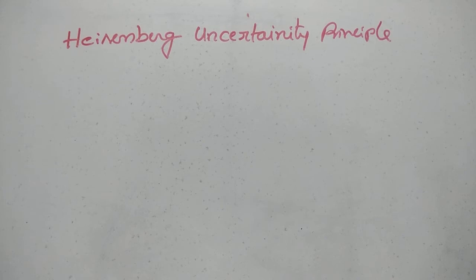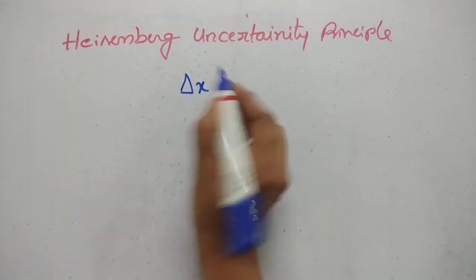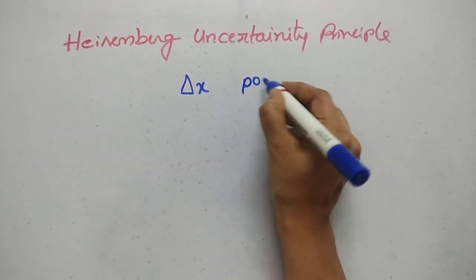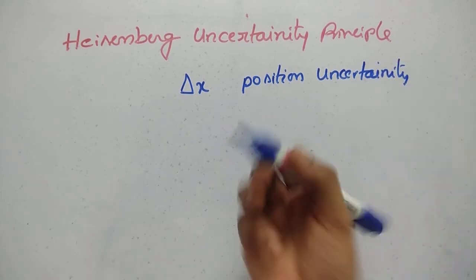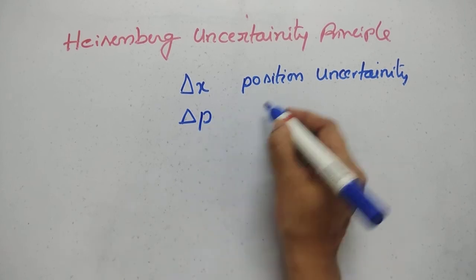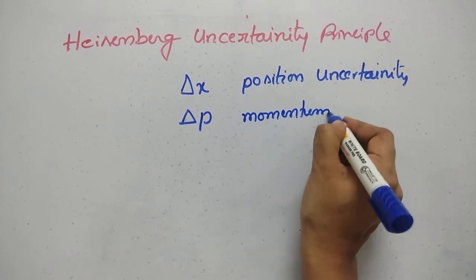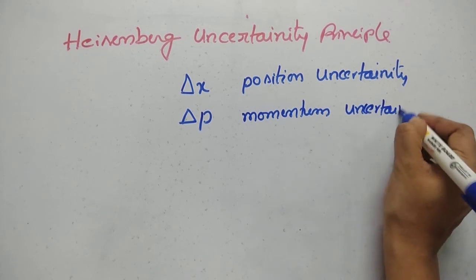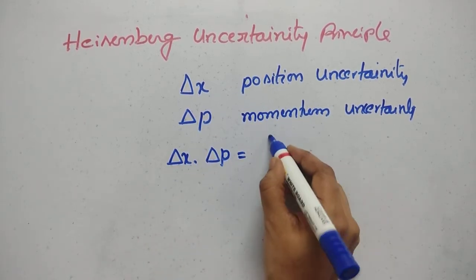Heisenberg is a scientist. I am going to explain what uncertainty means in nature. If delta x is the position uncertainty and delta p is the momentum uncertainty — p being mv — then delta x into delta p is equal to h by 4 pi.